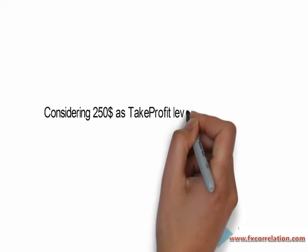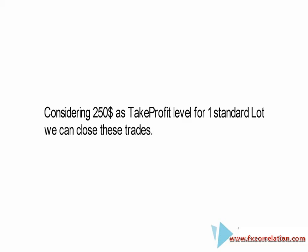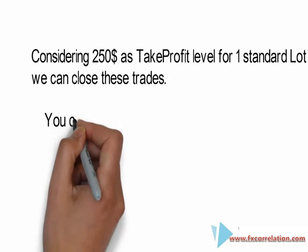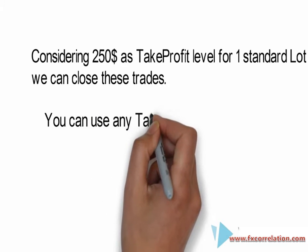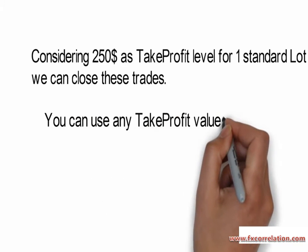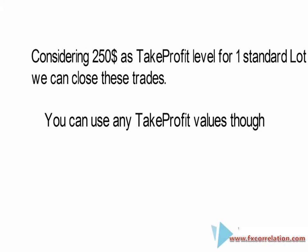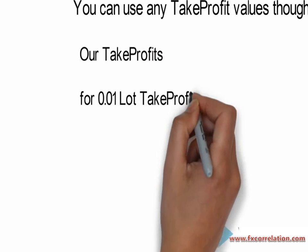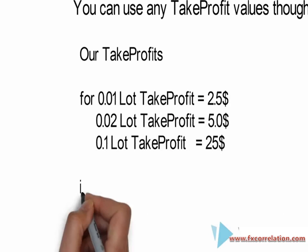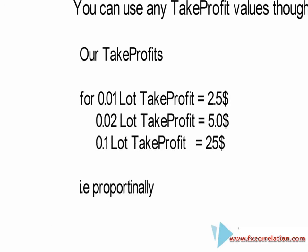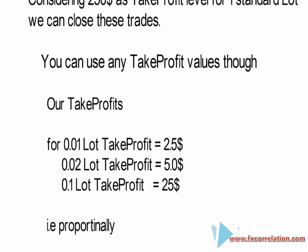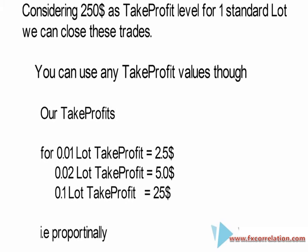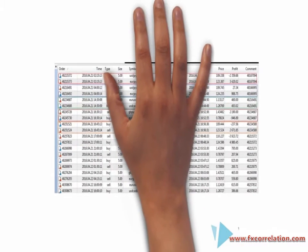Considering $250 as a take profit level for one standard lot, we can close these trades — you can set whatever target you want. For 0.01 lot, we use $2.50 as take profit. For 0.1 lot, we use a take profit of $25. And that is proportional.